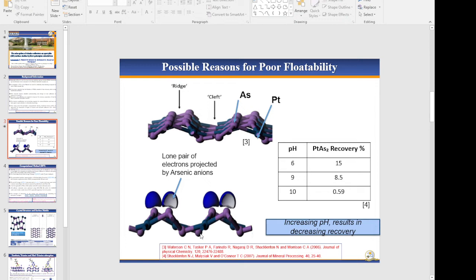Possible reasons for poor floatability include steric repulsion between arsenic lone pair of electrons and thiol sulfide, which results in lower binding energies according to O'Connor et al. Additionally, increasing pH results in decreased recovery, as shown by the table.